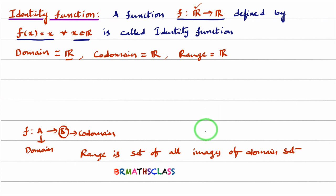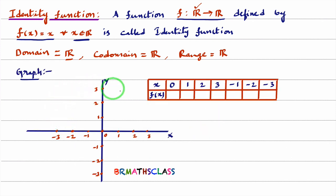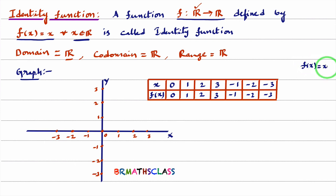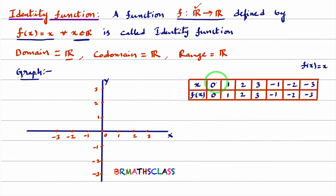Now we will learn how to draw the graph of the identity function. I consider a coordinate axis and some x values, and we will find the respective functional values. When x = 0, f(0) = 0. f(1) = 1, f(2) = 2, f(3) = 3, f(-1) = -1, f(-2) = -2, f(-3) = -3. Because f(x) = x. To draw the graph, I need to plot these points.